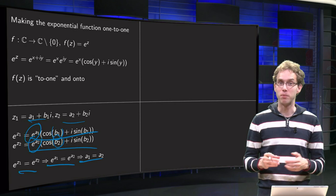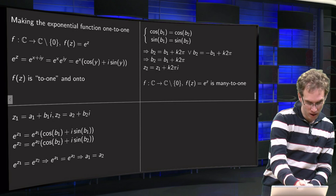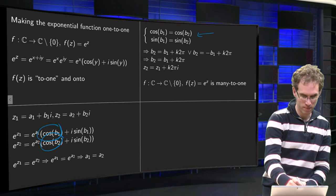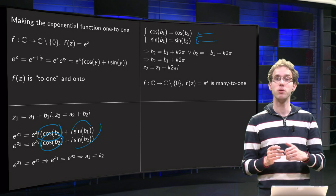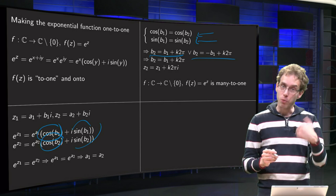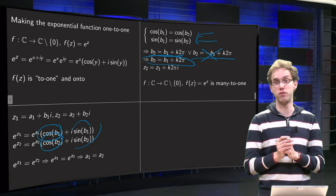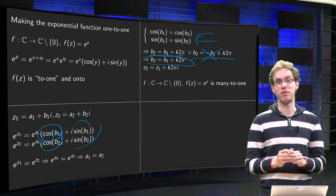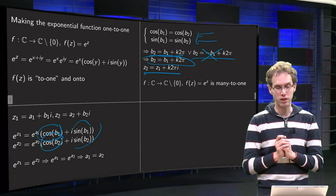What about b₁ and b₂, the imaginary parts? Since e^(a₁) and e^(a₂) are already equal, we need cos b₁ = cos b₂ and sin b₁ = sin b₂. From real analysis, cos b₁ = cos b₂ gives b₁ = b₂ + 2πk or b₂ = −b₁ + 2πk. The sine condition eliminates the second case, so we are left with b₂ = b₁ + 2πk. The imaginary parts may differ by a multiple of 2π, so z₂ = z₁ + 2πki.